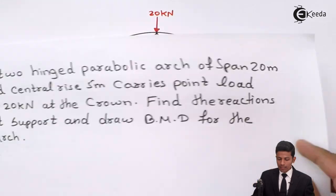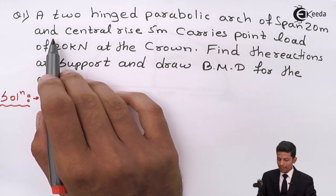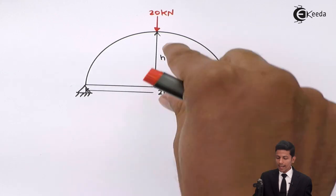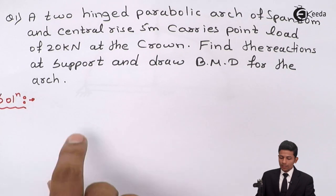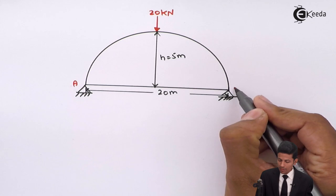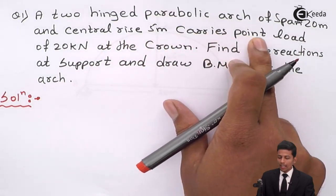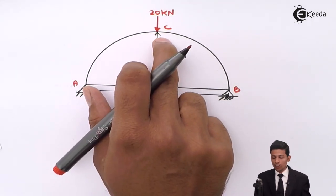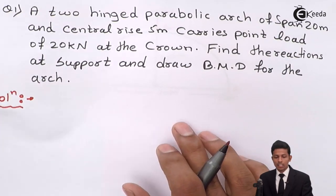We have done the diagram. The question gives a 2-hinged parabolic arch of span 20 meters and central rise 5 meters. The span is 20 meters and the rise is 5 meters. This is a 2-hinged arch, so label the hinges as A and B, and the crown as C. A point load of 20 kN is applied at the crown. We have to find reactions VA, HA at A and VB, HB at B.